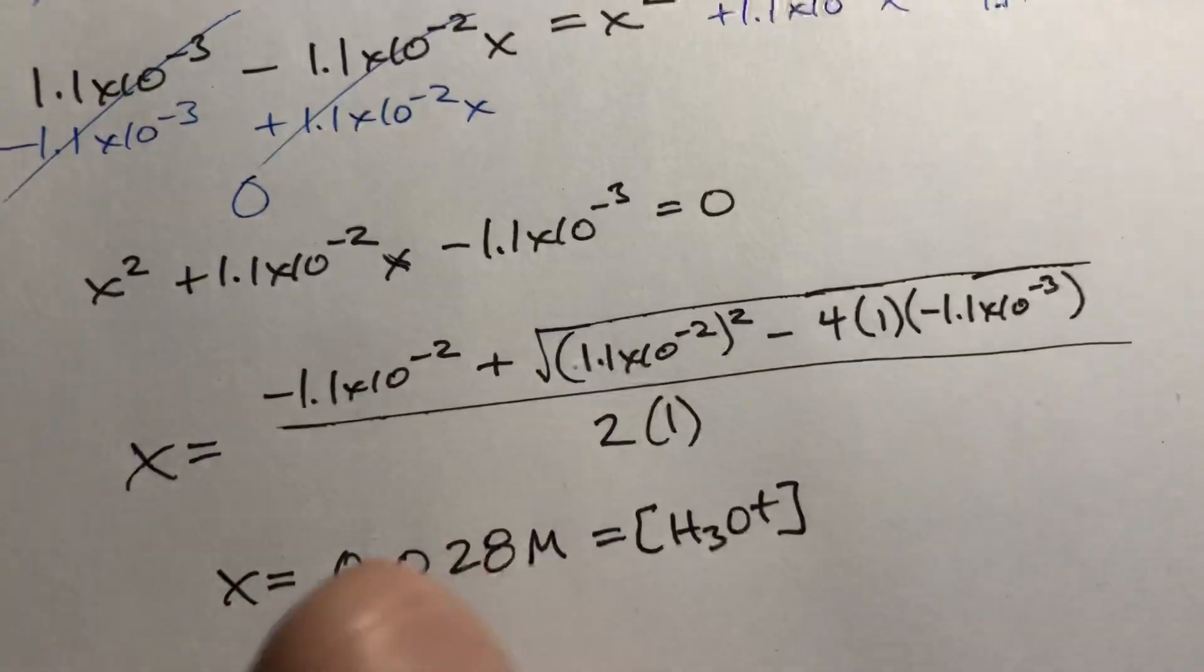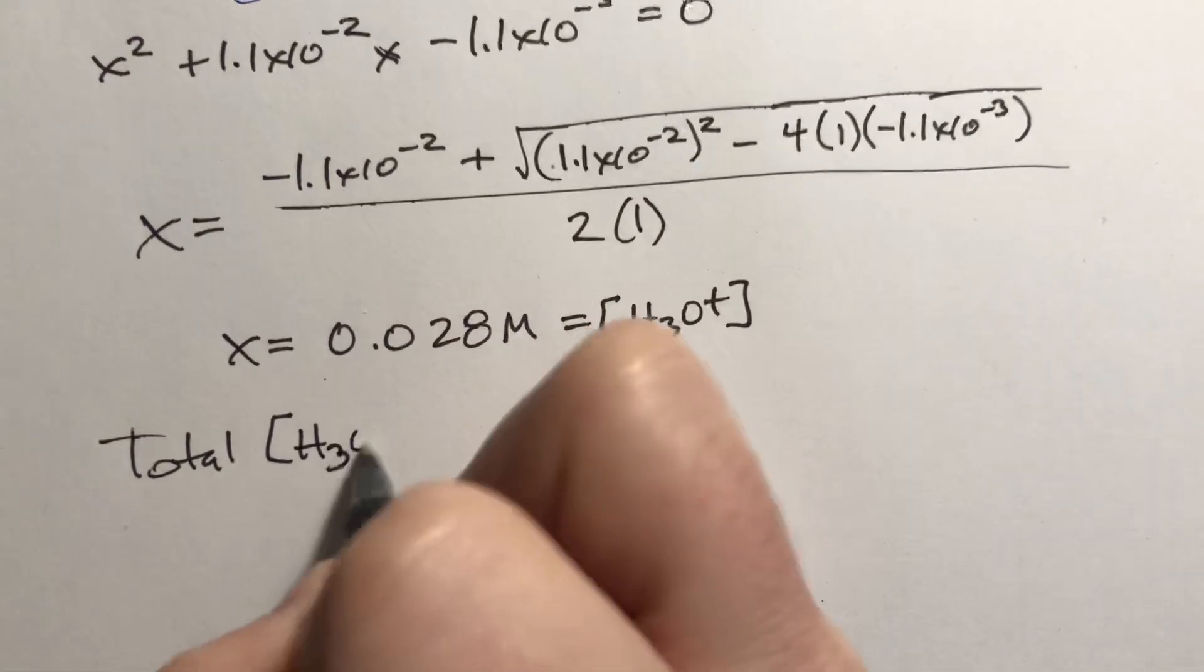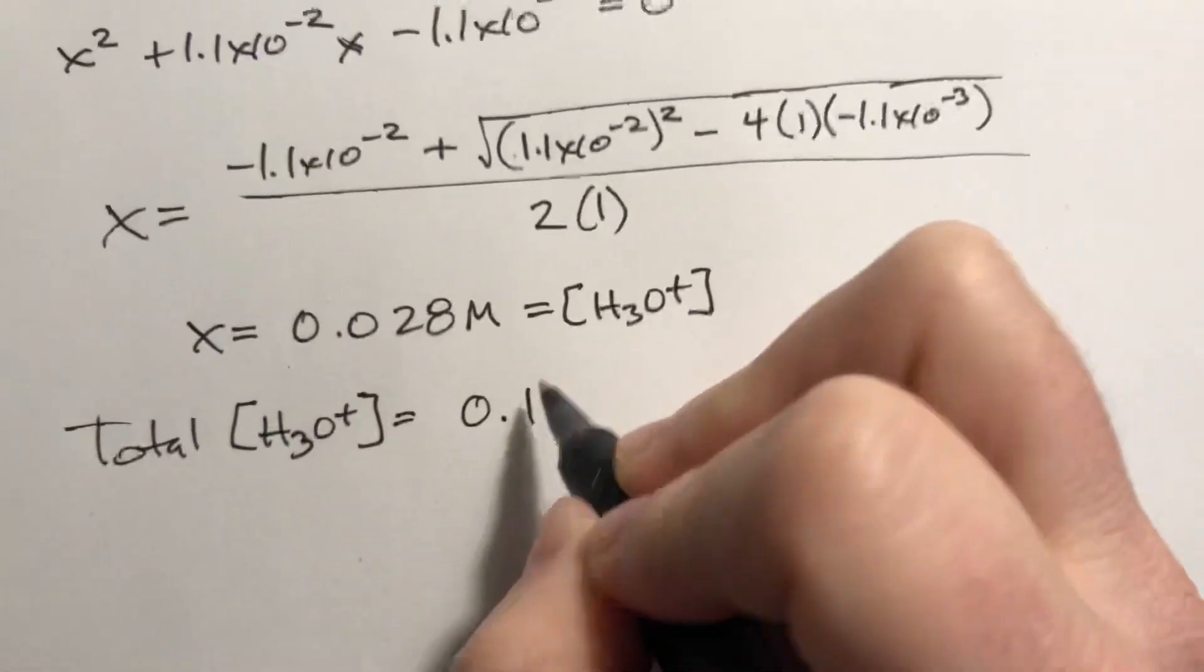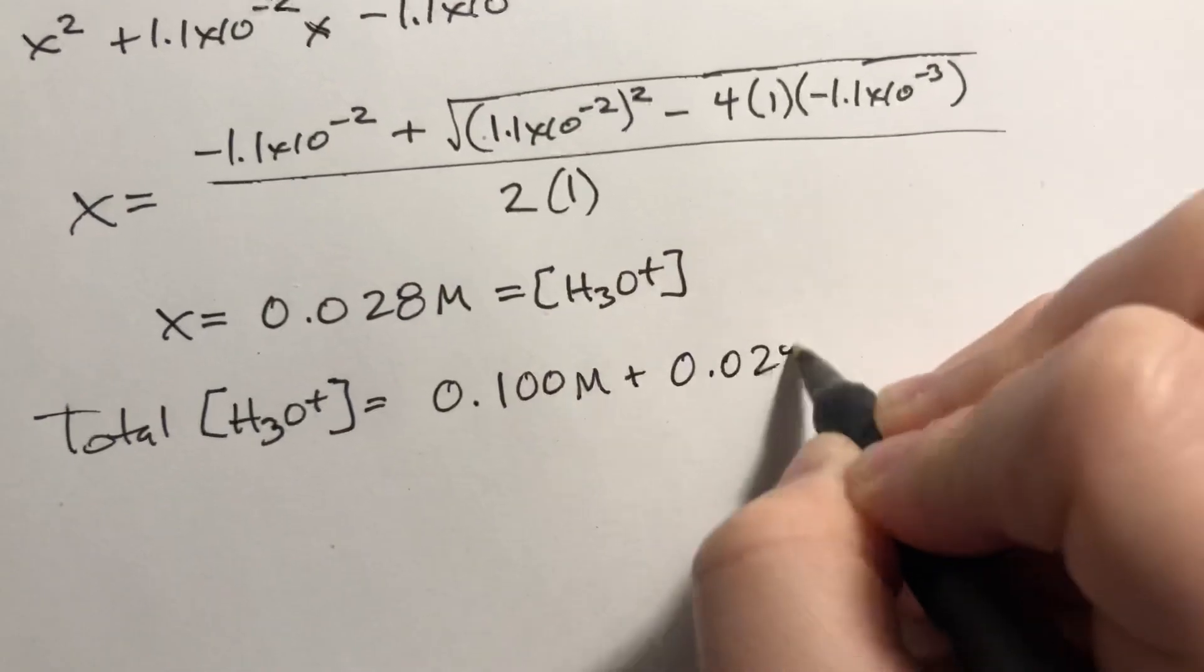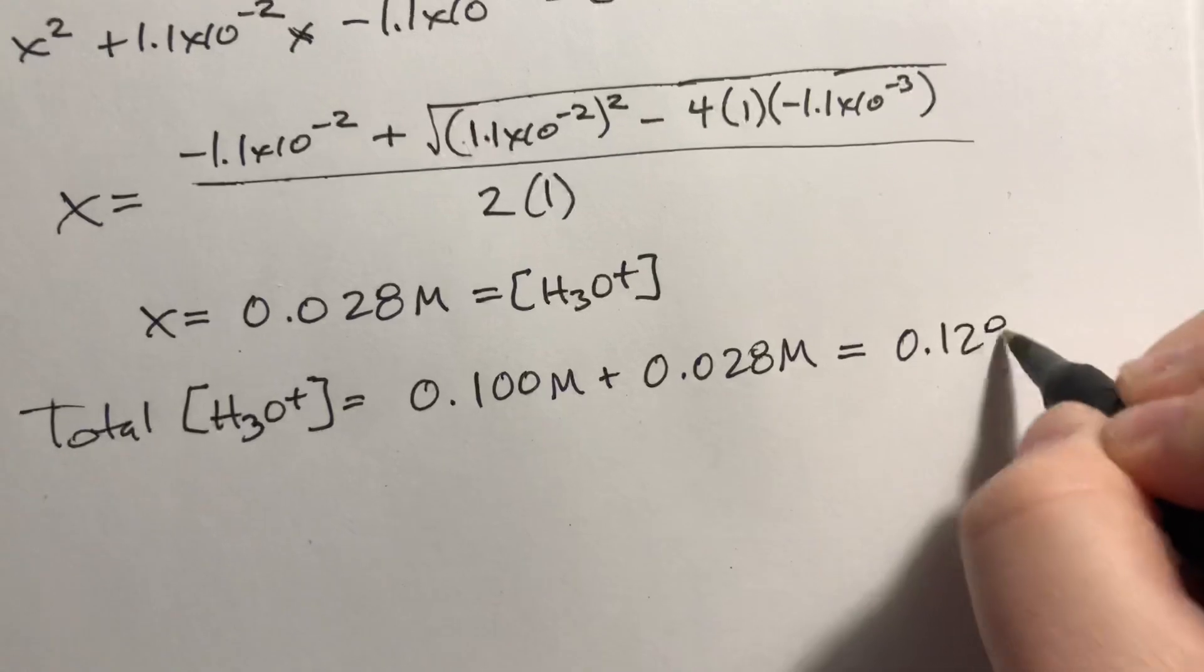So the total amount of H3O+ is basically 0.100 from the first reaction, plus this 0.028 from the second reaction, and it gives us a value of 0.128.